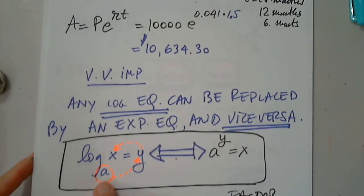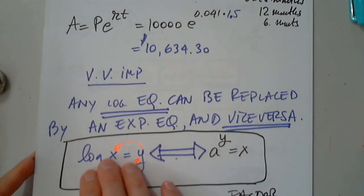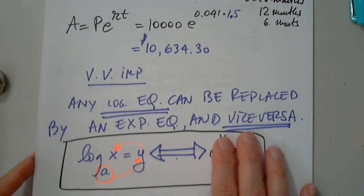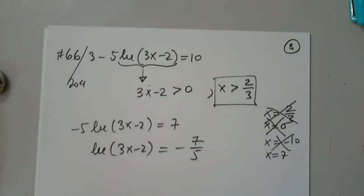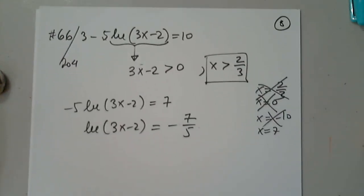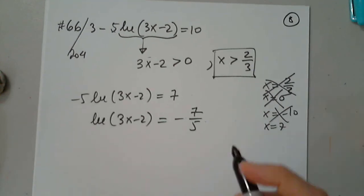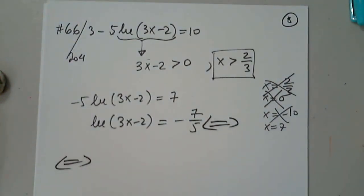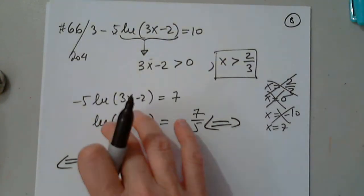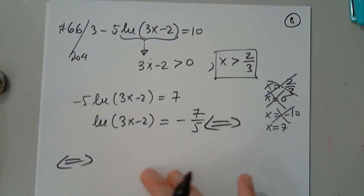So I have to change the log equation into an exponential equation. The base raised to whatever equals this. So can anyone tell us how to write this? This is equivalent to what? This means this implies this. What you're going to tell me implies that?